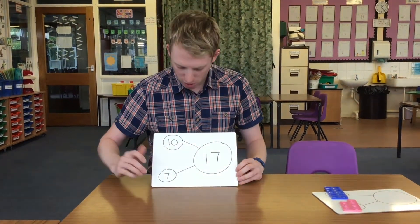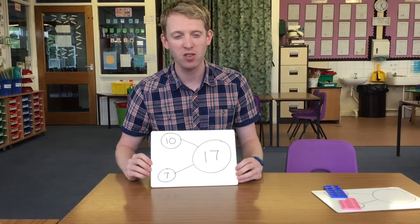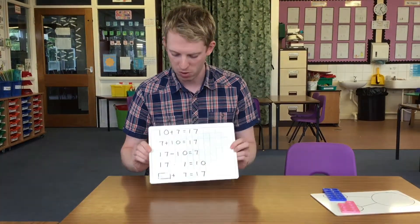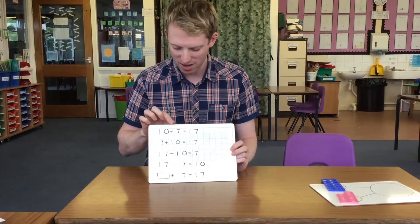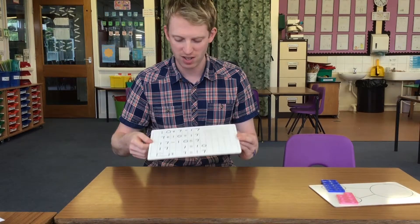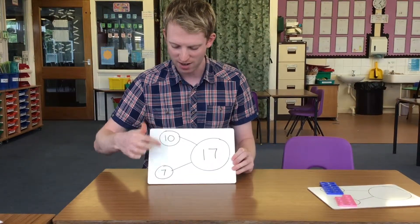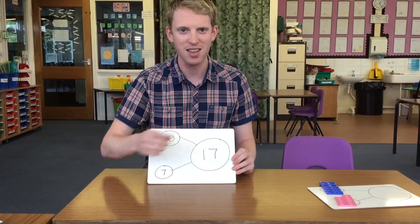Once we can use that model, we can start doing some calculations with it as well. So we looked at earlier we've got 10 add 7 equals 17, which we've got there. The 10 add the 7 makes a 17 whole.